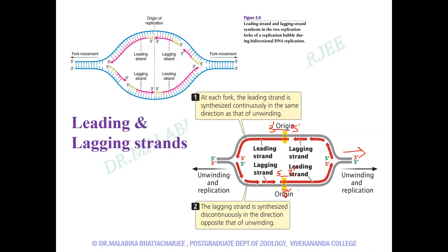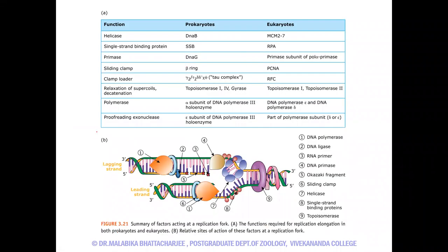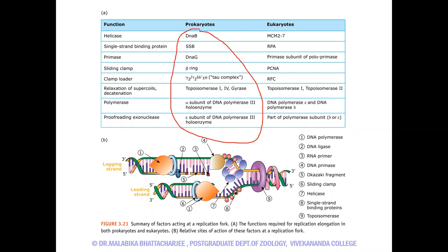Replication is bidirectional, and since we have a definite polarity, DNA can only be extended at the three prime end. Hence the concept of leading and lagging strand has arisen as discussed earlier. We had discussed all the enzymes: helicases, single strand binding proteins, primases, the sliding clamp, the clamp loader, relaxation of supercoils by topoisomerase, the polymerase, and POL1. These are the sets of enzymes in prokaryotes. We restrict ourselves to prokaryotes only because eukaryotes are not part of the syllabus.